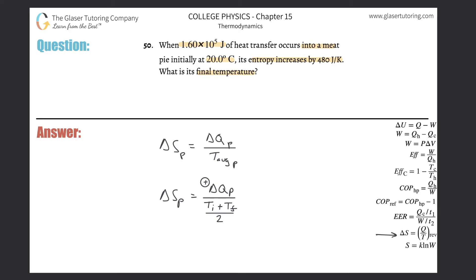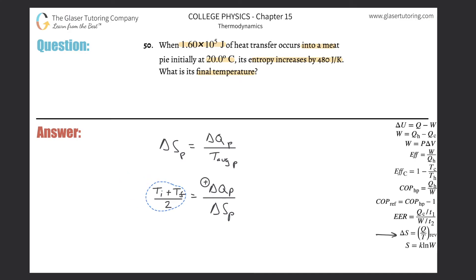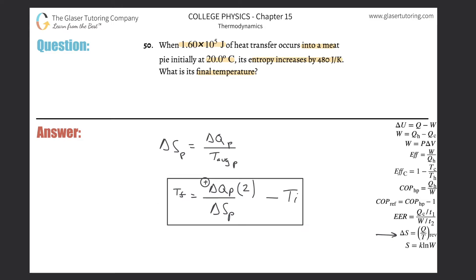We are after finding the final temperature, so we do a little algebra. The denominator on the right goes to the numerator on the left, and the numerator on the left goes to the denominator on the right. Then I move the two from the denominator on the left to the numerator on the right, and subtract the initial temperature from both sides to isolate T-final. There's the formula — now all we need to do is plug in.